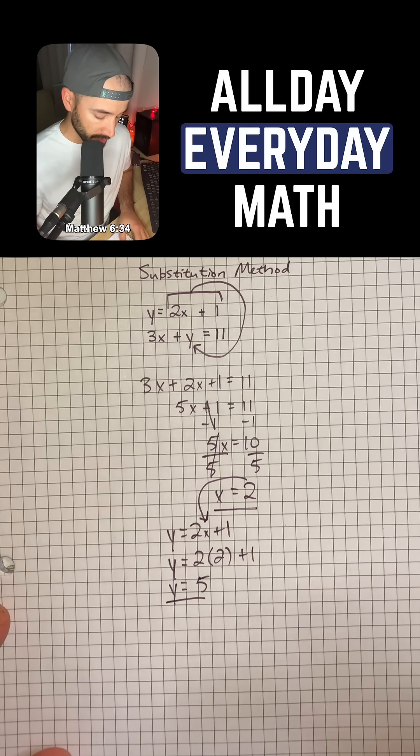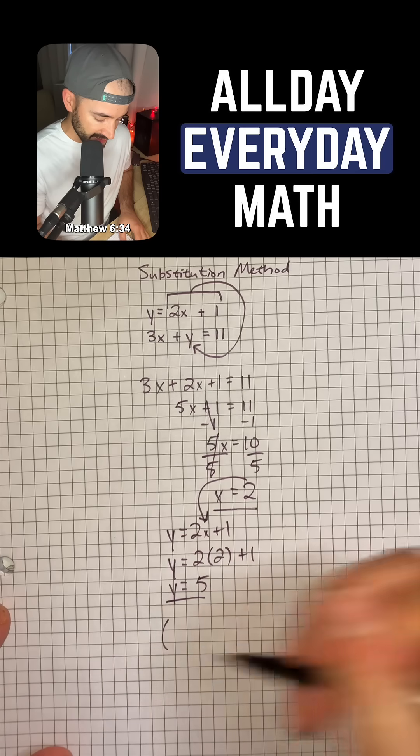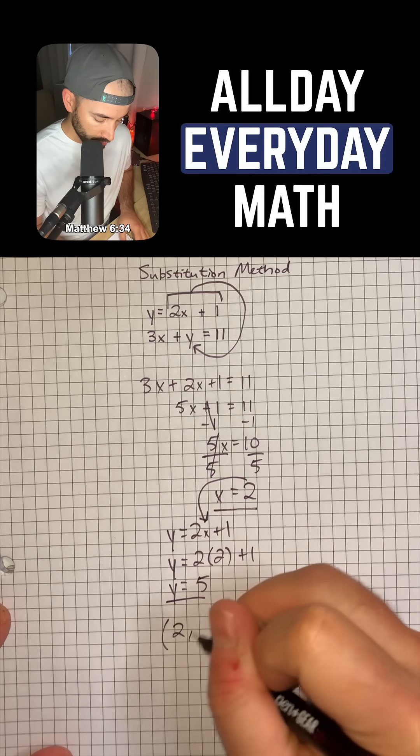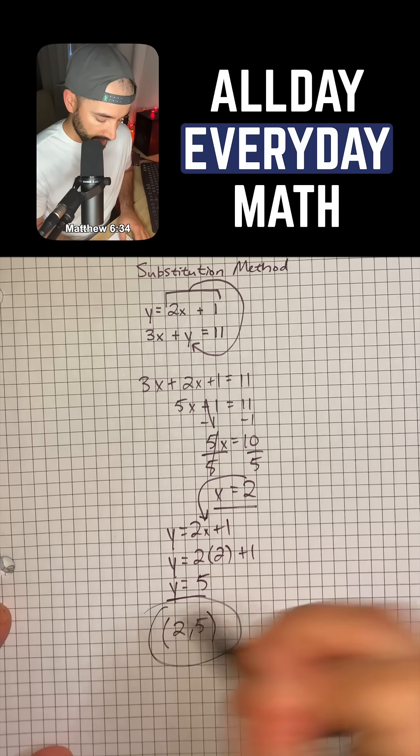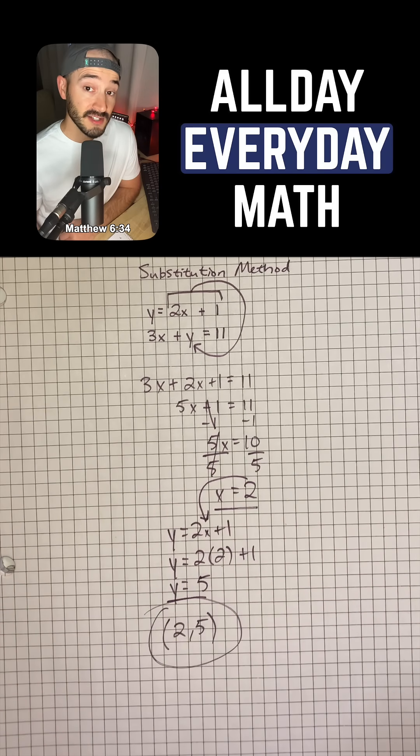And so now we've solved for both variables. So our solution to this system of equations is (2, 5), and that would be our answer. That is all you have to do.